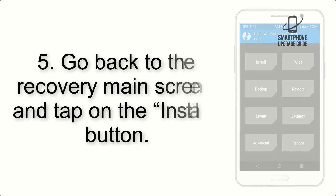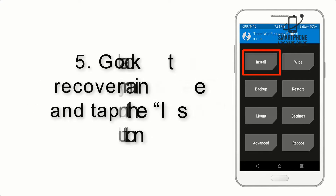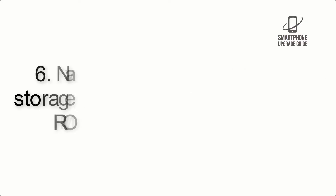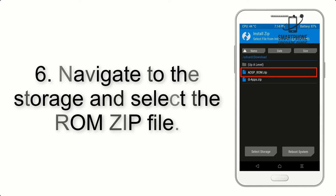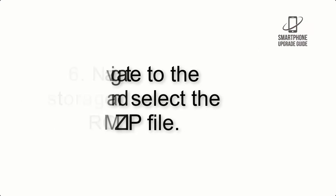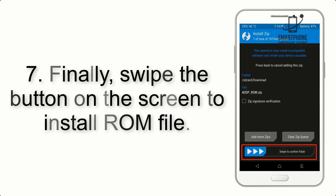Step 4: Swipe the button to wipe the device. Step 5: Go back to the recovery main screen and tap on the install button. Step 6: Navigate to the storage and select the ROM zip file.